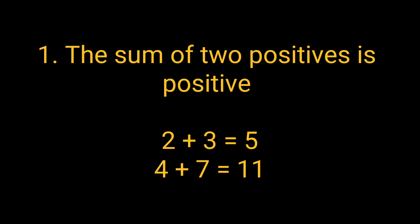The first rule is the sum of two positives is positive, which means that when we add two positive numbers, we always get a positive number. For example, 2 plus 3 is equal to 5. Similarly, 4 plus 7 is equal to 11.